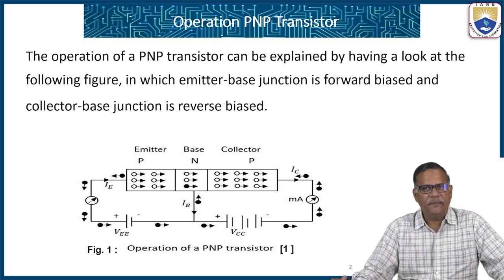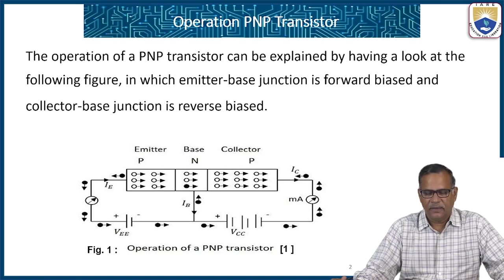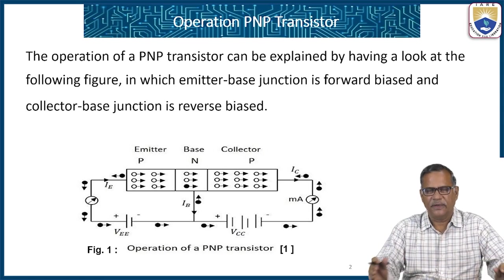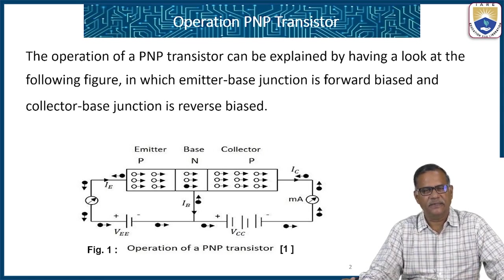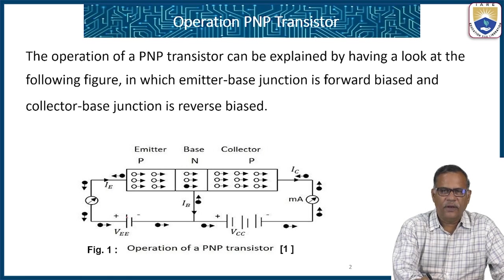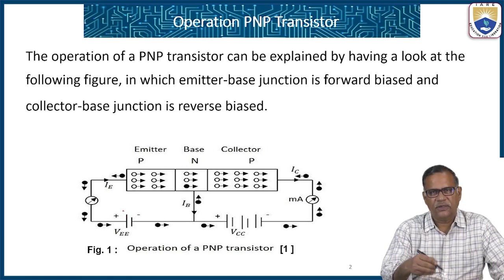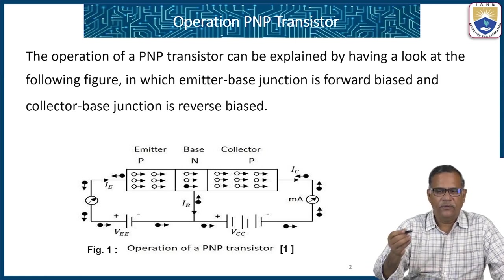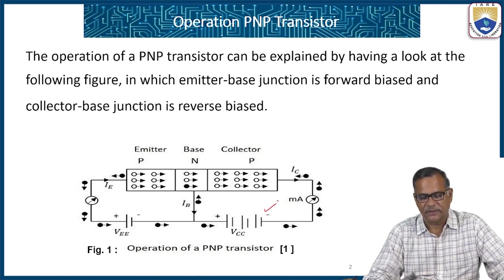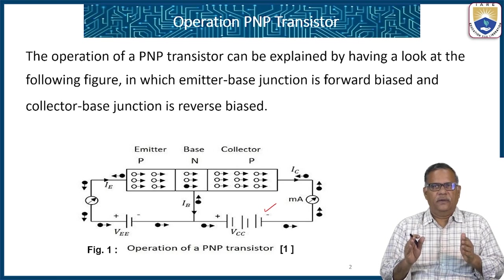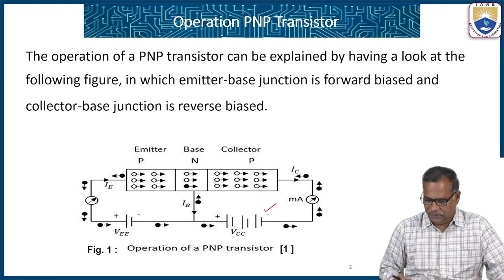The operation of a PNP transistor can be explained by seeing this figure, in which the emitter-base junction is forward biased and the collector-base junction is reverse biased. For a PNP transistor, the P-type emitter requires a positive voltage so that it is forward biased, and the collector, which is P-type, requires a negative voltage so that it is reverse biased. This is how the PNP transistor has to be connected to operate in the active region.